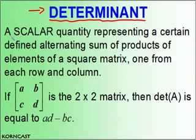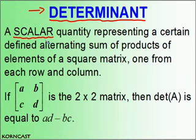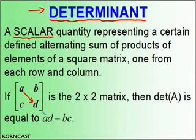By definition, the determinant is a scalar quantity representing a certain defined alternating sum of products of elements of a square matrix, one from each row and column. So basically, we're going to get a scalar value representing a certain combination of sums and products. For example, if we have a 2x2 matrix ABCD, then the determinant is equal to the product of our diagonal AD, minus the product of BC.